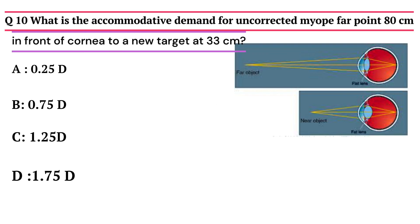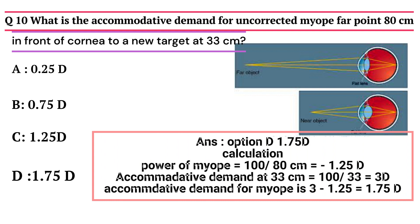Question 10: What is the accommodative demand for uncorrected myopia whose far point is 80 cm in front of the cornea, for a new target at 33 cm? Options: A - 0.25 diopter, B - 0.75 diopter, C - 1.25 diopter, D - 1.75 diopter. The answer is 1.75 diopter. The power of myopia with far point at 80 cm is minus 1.25 diopter. The accommodative demand for a target at 33 cm is 3 diopters; hence the accommodation required is 1.75 diopter.